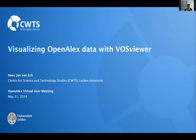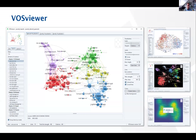My presentation is about visualizing OpenAlex data with VOSviewer. For those not familiar, VOSviewer is a tool that can be used to analyze and visualize scientific literature. You can use it to get a quick overview of the main topics discussed in the scientific literature, to see how those topics are related to each other, or to get an overview of the main actors and how they collaborate.